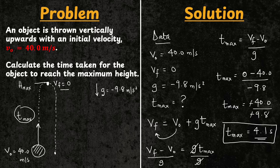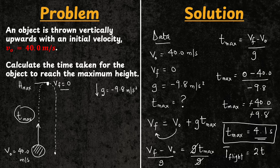An additional key point: from the maximum height, it will take the same time to get back to its initial position. We can define this as the time of flight, which is 2 times the time taken to reach the maximum height. We can use this to calculate the total time for the object to go up and return to its starting position.